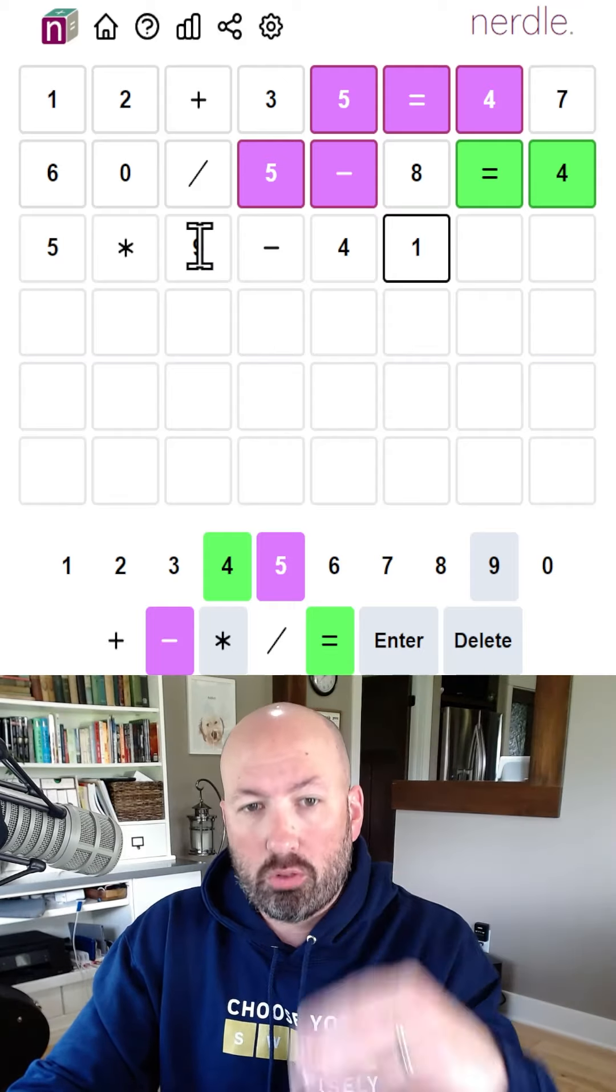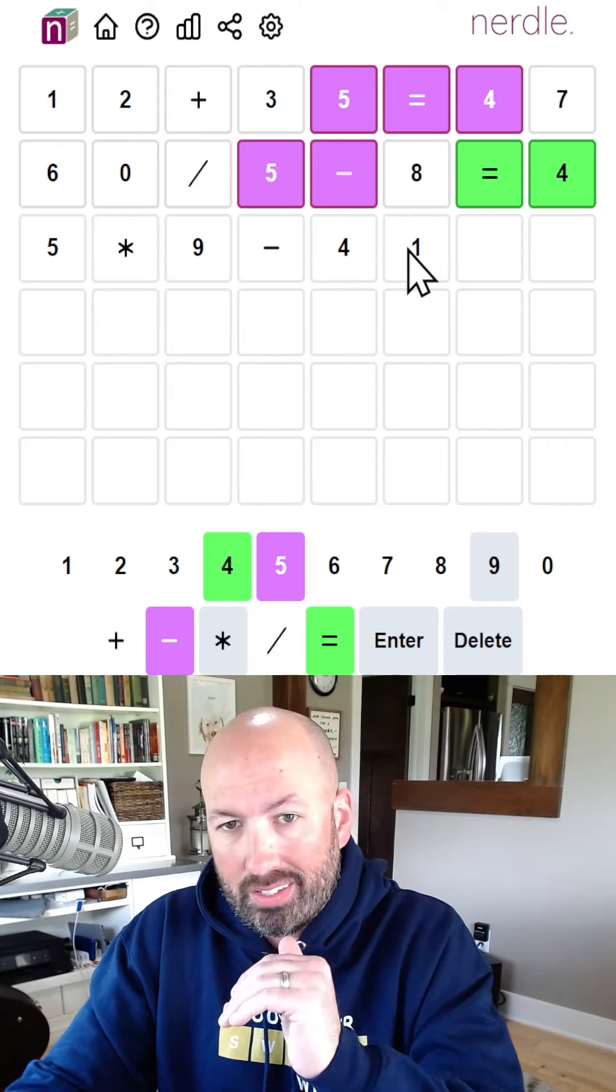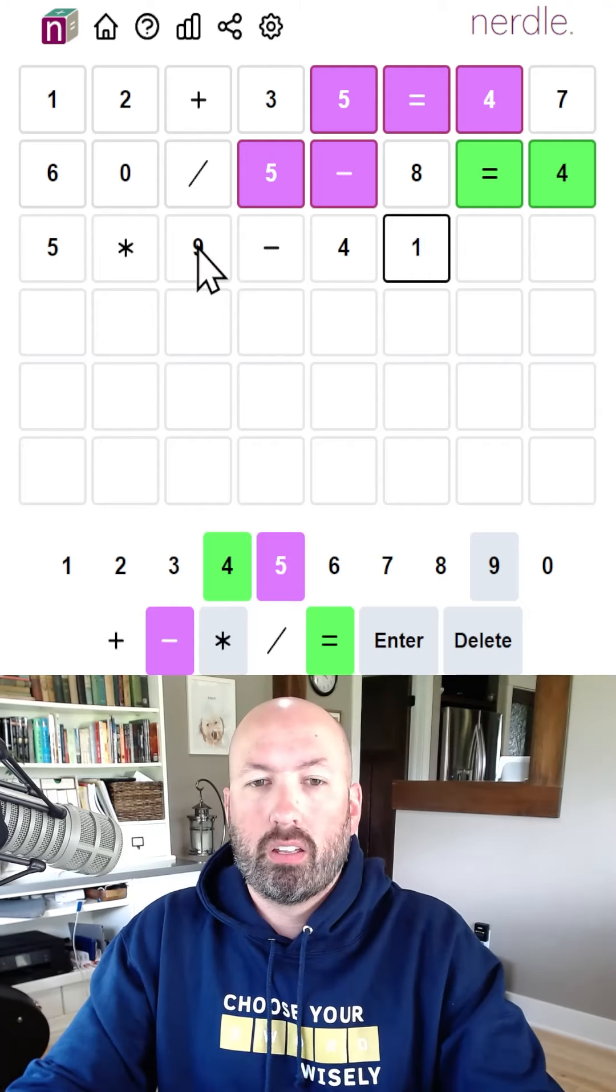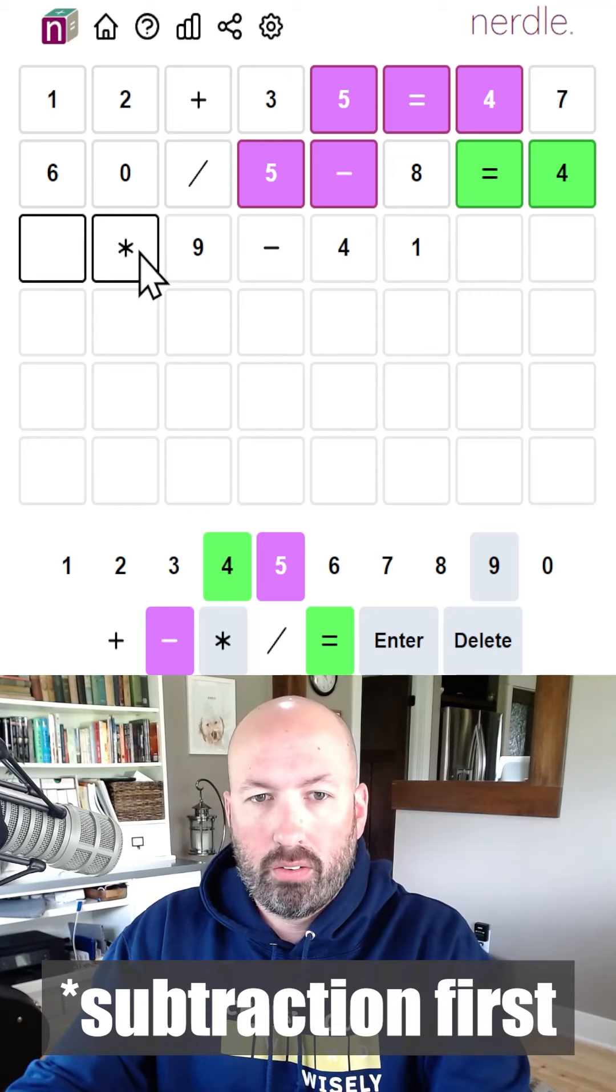And then you'd have to subtract either something with a one, or if it's something with a zero, you have to subtract something with a six here. And we can't put a one or a six in it, so it can't be single digits multiplied minus two. So it has to be multiplication first.